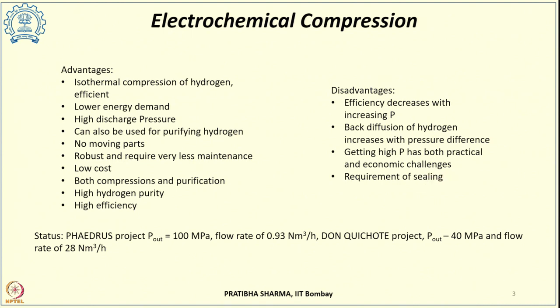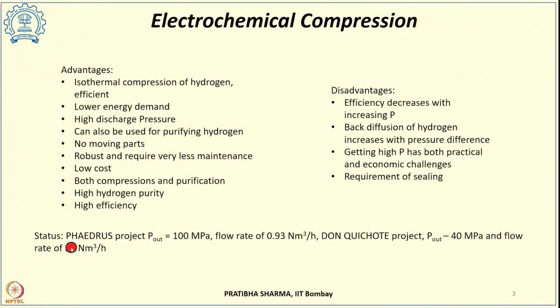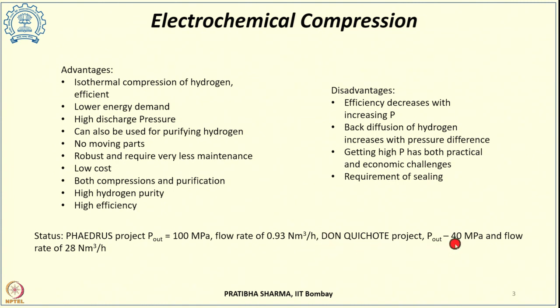There is a requirement for sealing to avoid hydrogen leakage. Regarding the current status, several projects have demonstrated the use of electrochemical compressors — the Federer's project achieved an output pressure of 100 MPa at a flow rate of 0.93 normal meter cube per hour. Another project, the Don Quichard project, offered an output pressure of 40 MPa at a flow rate of 28 normal meter cube per hour.